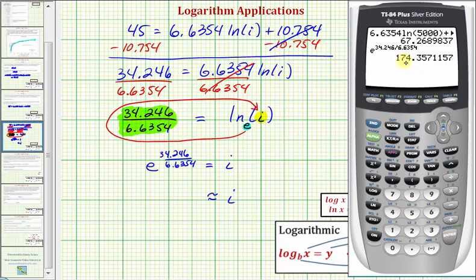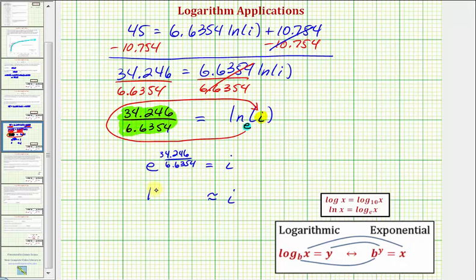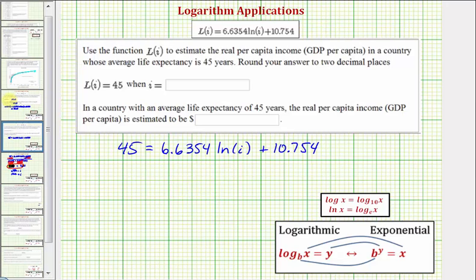Rounding to two decimal places, we'd have 174.36. So going back to our question, if L(I) equals 45, then I equals 174.36, which means in a country with an average life expectancy of 45 years of age, the real per capita income, or GDP per capita, is estimated to be 174.36.